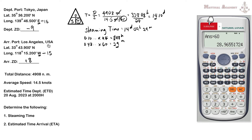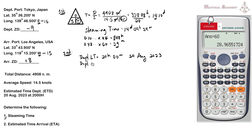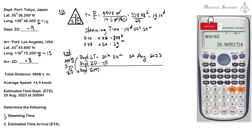Now we proceed to find the estimated time of arrival. Starting with the estimated time of departure in local time: 2000 hours, 00 minutes, August 20, 2023. We apply the departure zone description, which is -9. To convert local time to GMT, we apply the sign of the zone description — since it is negative, we subtract: 2000 minus 9 hours equals 1100 hours. Bring down the minutes: 00. Date remains August 20. This is our departure GMT.